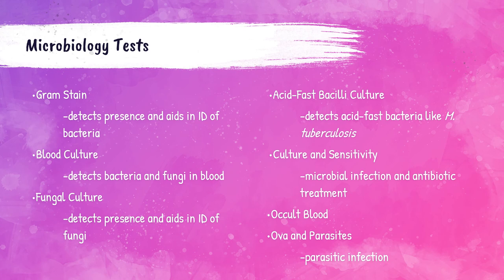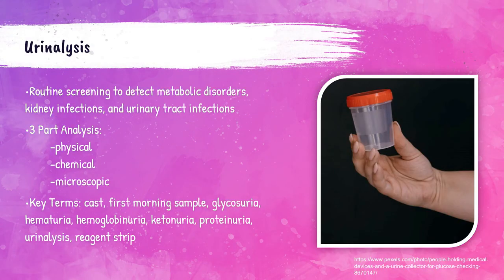The urinalysis department analyzes a patient's urine to help diagnose things like diabetes mellitus, infectious disease, and kidney disease. Urinalysis looks at physical characteristics, chemical composition, and microscopic examination for abnormal urinary sediment. Key terms include: cast, first morning sample, glycosuria, hematuria, hemoglobinuria, ketonuria, proteinuria, urinalysis, and reagent strip. Casts are microscopic cylindrical structures produced by the kidney that can be seen in microscopic urinalysis evaluation and indicate certain disease states.